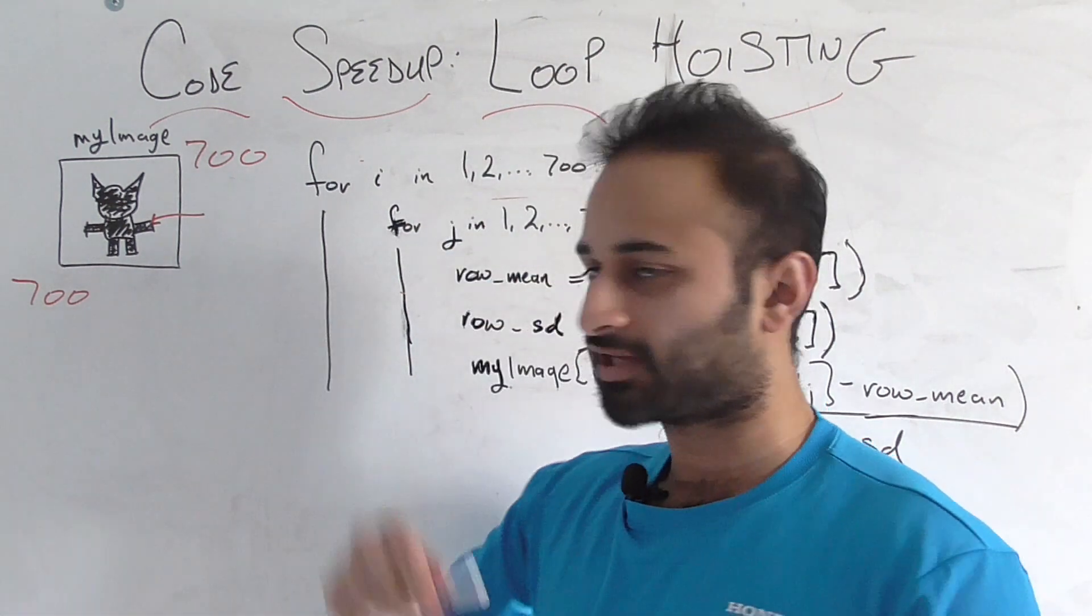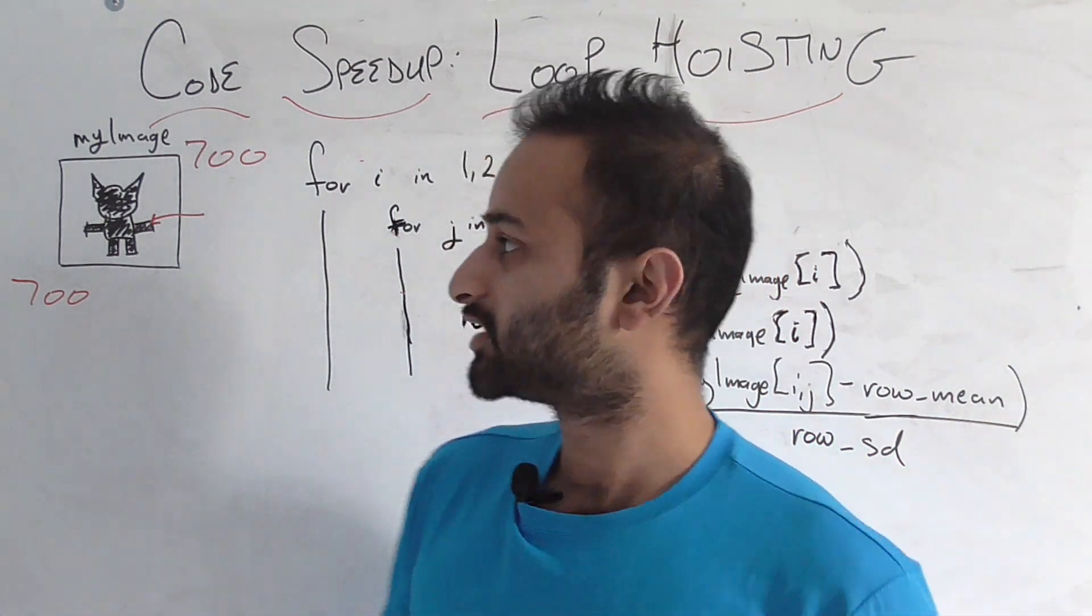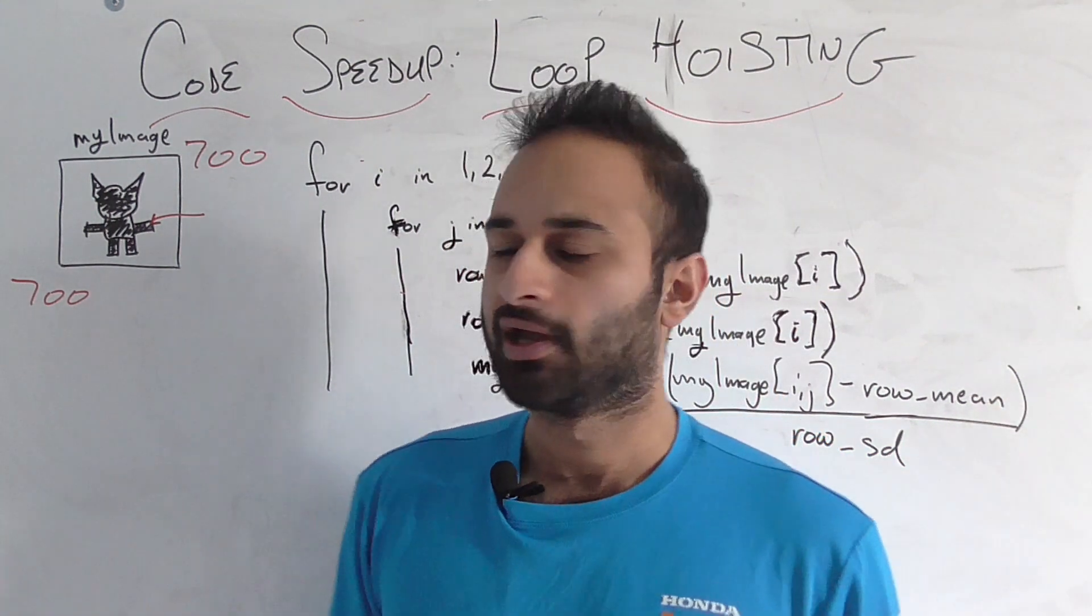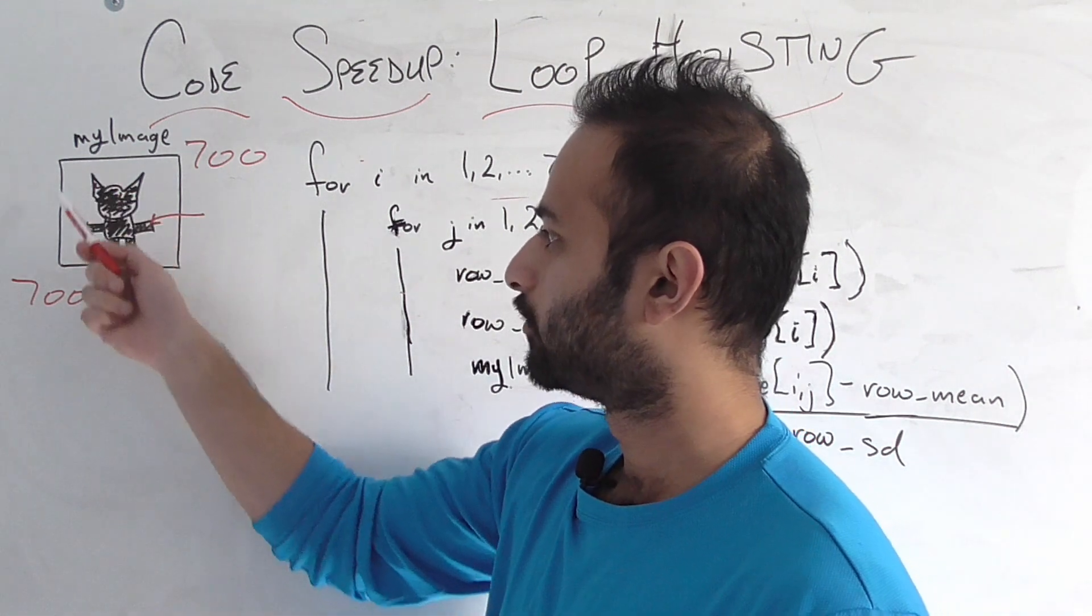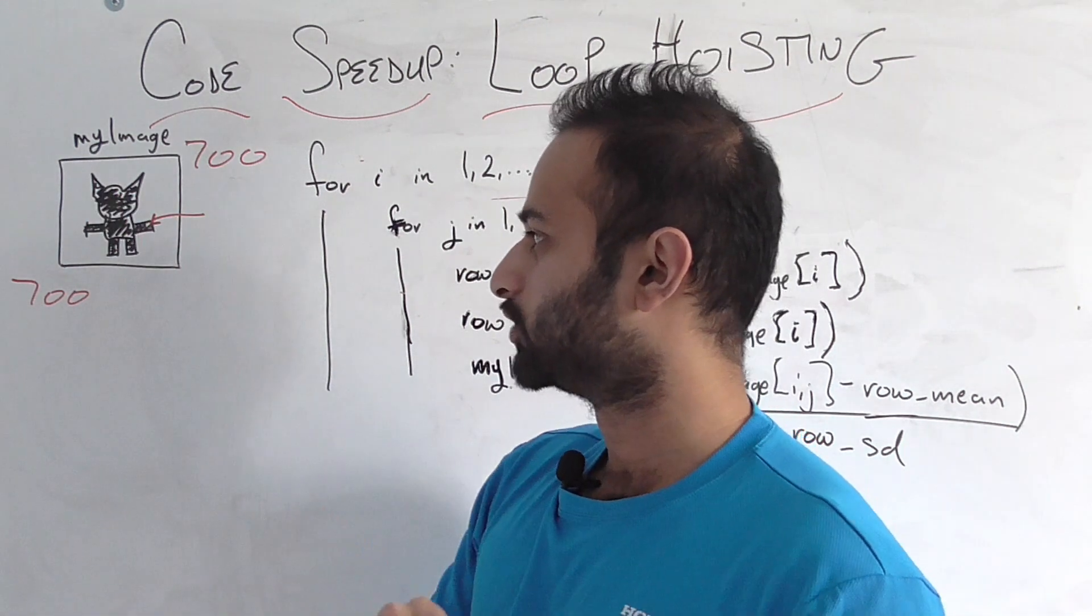First of all, let's give a context so we're not just talking about coding for coding's sake. Let's say we're doing some image processing. And we have this image which is 700 pixels wide by 700 pixels tall. And it's some little creature right here.